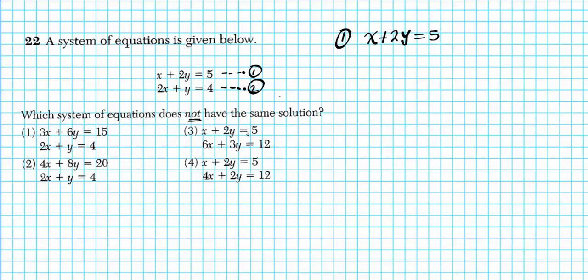So any system of equations with this equation or an integer multiple of this equation combined with this second equation will have the same solution as this system. So what do we do? So we look for any equations that has the first one as x + 2y. So option 3 is good. Option 4 is good. Now we're done with that.